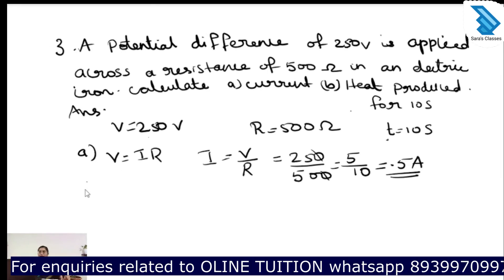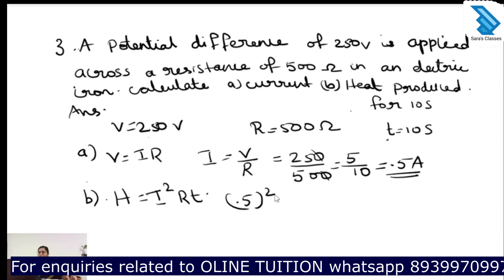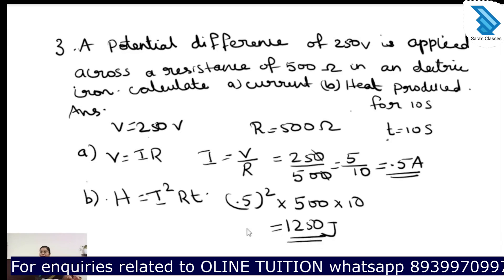Next we have to find the heat produced. The equation to find heat produced is H equal to I squared R T. So I is 0.5 whole squared, into resistance 500, into time 10 seconds. The answer is 1250 joules.